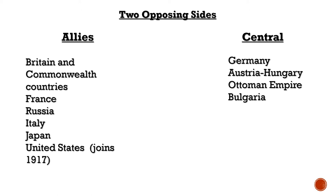On the Central Power side you had these big empires — the German Empire, Austria-Hungary, and the Ottoman Empire. These multi-ethnic, multinational empires were already struggling on the eve of World War One, and World War One would ultimately destroy them. The Austro-Hungarian Empire would not survive World War One, and neither would the Ottoman Empire.